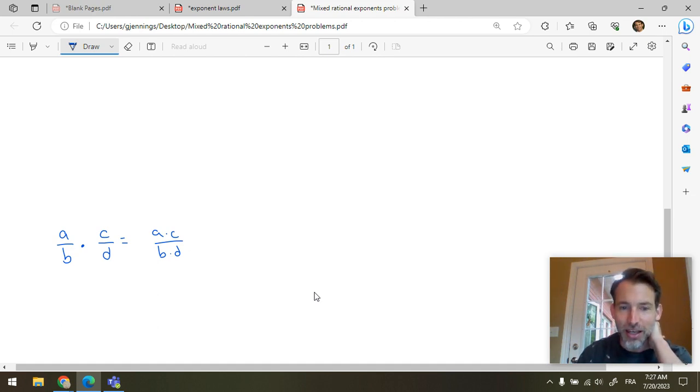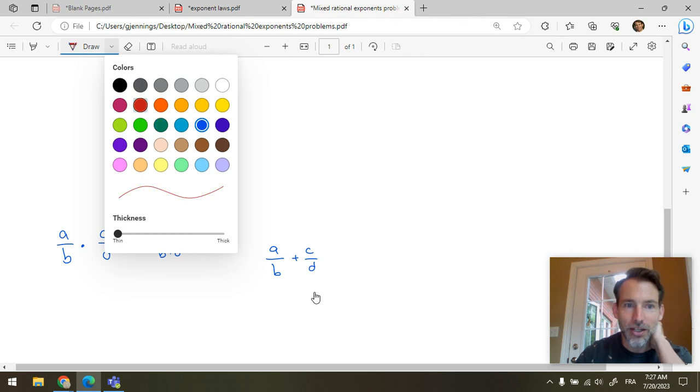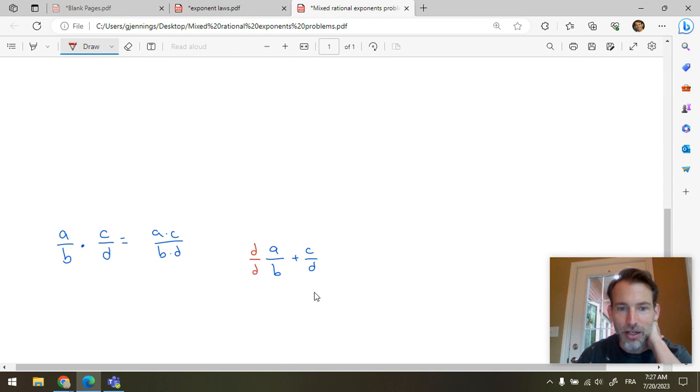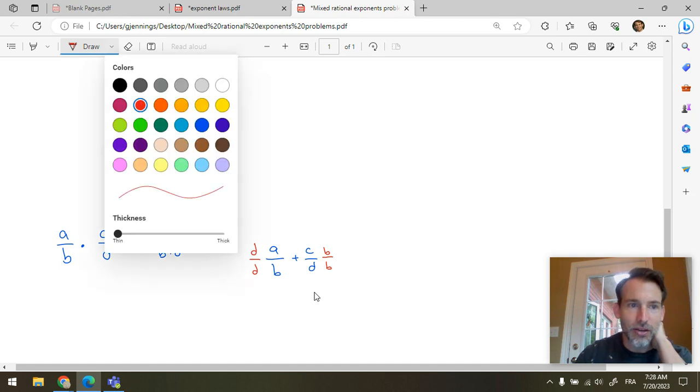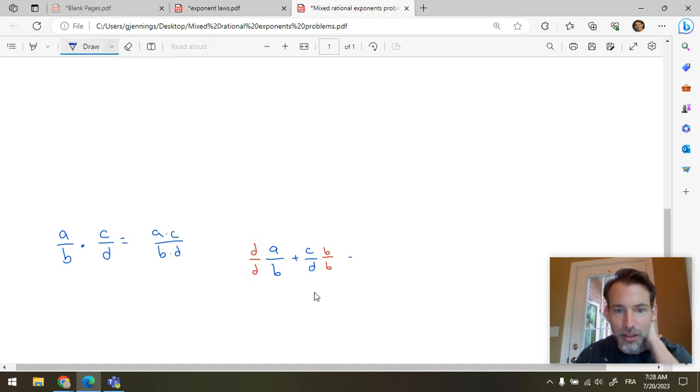And if I have a over b plus c over d, well, you know what I got to do to do that addition? You've got to create a common denominator. So, we're going to multiply top and bottom by d over here, and top and bottom by b over here. Now, they're all over bd. So, now this will be equal to ad plus bc over bd. If you didn't know that, then you're confused by that explanation.